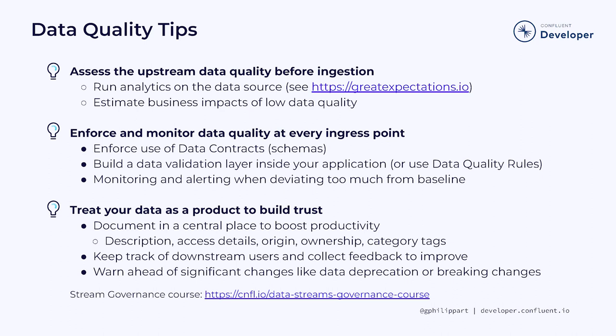Finally, try to keep track of downstream users and collect feedback from them to identify pain points and improve your data, just like you would with a software product. If there is a significant change that you must perform, communicate it clearly and give plenty of time for your downstream consumers to adapt. Confluent has built some great features to help you do all of that — check out the stream governance course on developer.confluent.io to learn more.